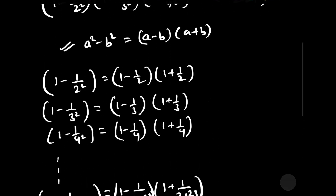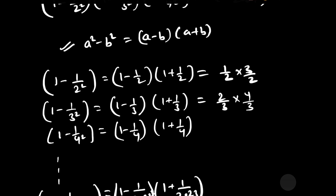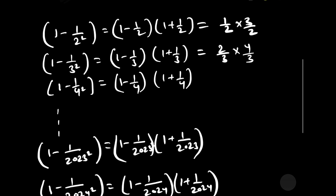Let us calculate the individual values: 1 minus 1 by 2 equals 1 by 2, and 1 plus 1 by 2 equals 3 by 2. Further, 1 minus 1 by 3 equals 2 by 3, and 1 plus 1 by 3 equals 4 by 3. Now, 1 minus 1 by 4 equals 3 by 4, and 1 plus 1 by 4 equals 5 by 4.